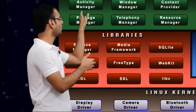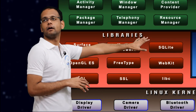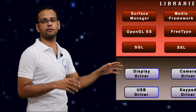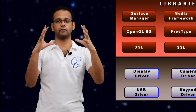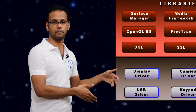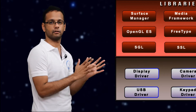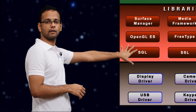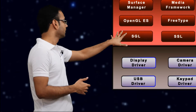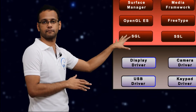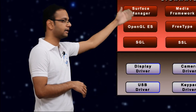Now you come to the libraries layer — all these orange portions are implemented in C and C++. We have the surface manager, which manages whatever things you place on the screen — whether buttons, images, or anything else — arranging them so they can be sent to the display driver. It manages all the components and renders them into a single image. Then we have OpenGL and SGL, the two graphics libraries. OpenGL ES (Embedded System) is for 3D graphics, and SGL (Scalable Graphics Library) is for 2D graphics. The surface manager uses these libraries and the output is rendered through the display driver.